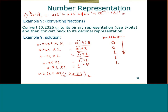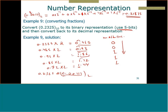When I convert and then go back, this is the number I get in the computer, because I used a low number of bits. If I increase the number of bits, I will have a much better approximation.